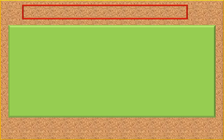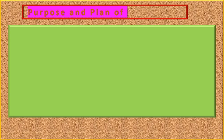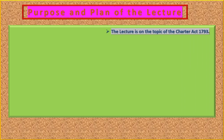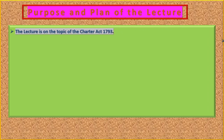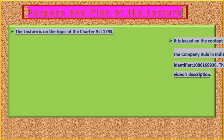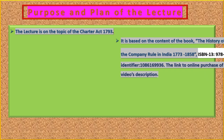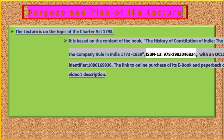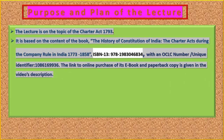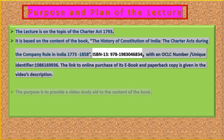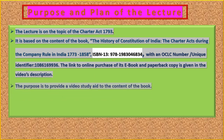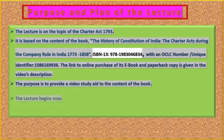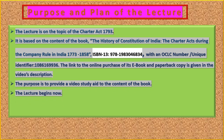The lecture is on the topic of the Charter Act 1793, based on the book 'The History of Constitution of India: The Charter Acts during the Company Rule in India 1773–1858,' ISBN 978-1983046834, with OCLC number 1086169936. The link to purchase the e-book and paperback is in the video's description. The purpose is to provide a video study aid to the content of the book. The lecture begins now.